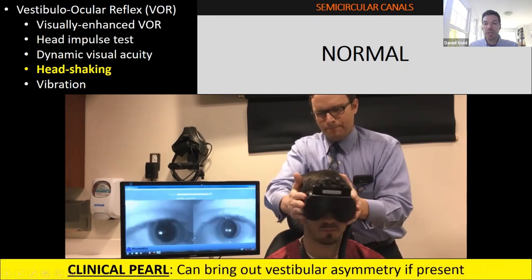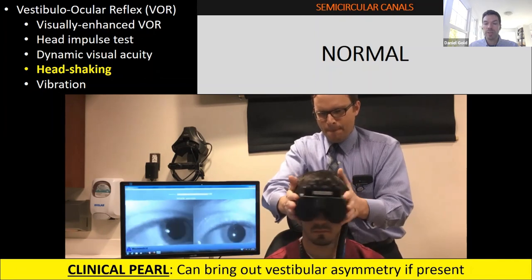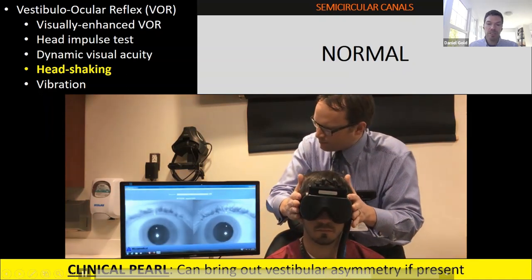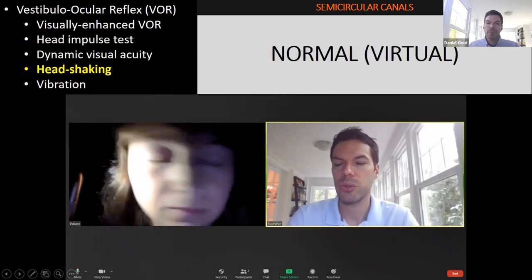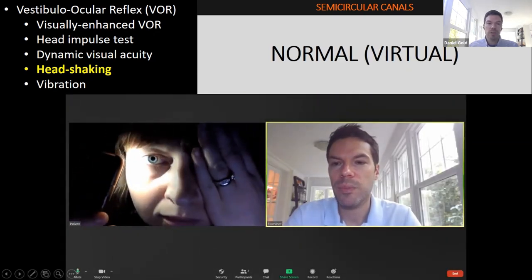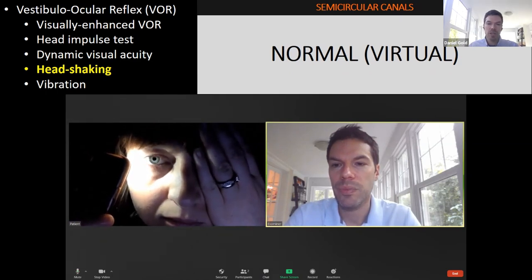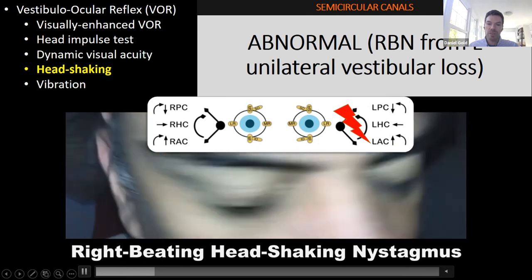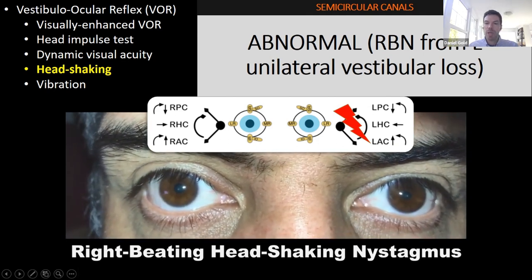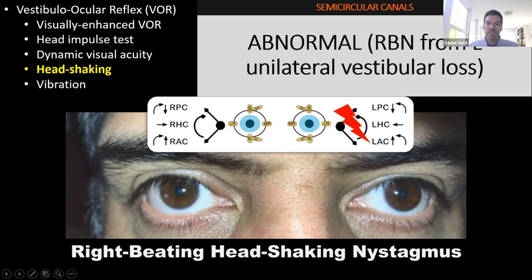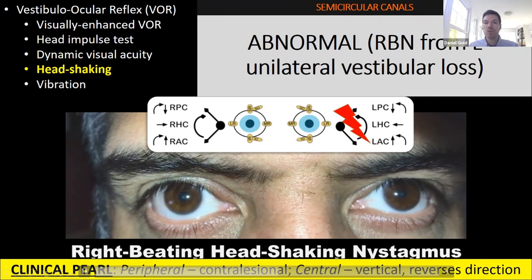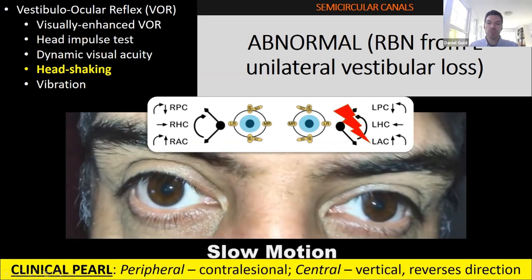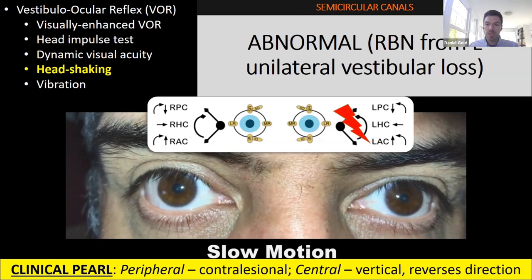Head shaking is a provocative maneuver to bring out vestibular asymmetry — about 2–3 Hz for about 15 seconds. A patient with normal vestibular function shows nothing at the end. This can be done in the virtual world, with the patient doing the head shaking. This patient had Ramsay Hunt syndrome on the left months ago, compensated well, and you couldn't see any right-beating nystagmus until head shaking — the nystagmus is contralesional, slow phase toward the paretic ear, fast phase away.